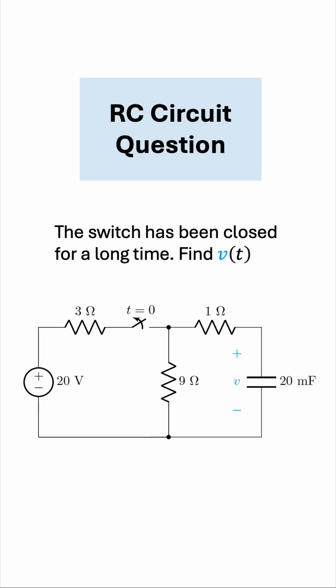Let's solve this RC circuit question together. The switch has been closed for a long time, and we can see from the circuit diagram that the switch was opened at t equals zero. Find V, the voltage across the capacitor as a function of time.